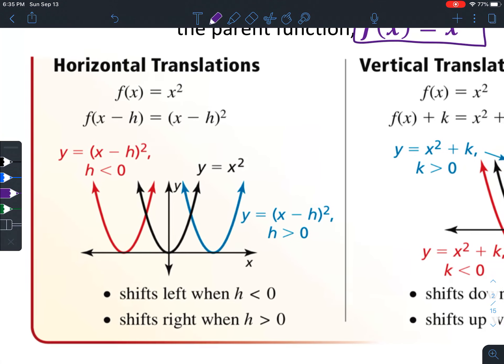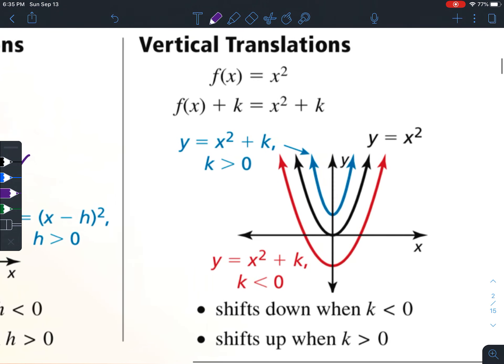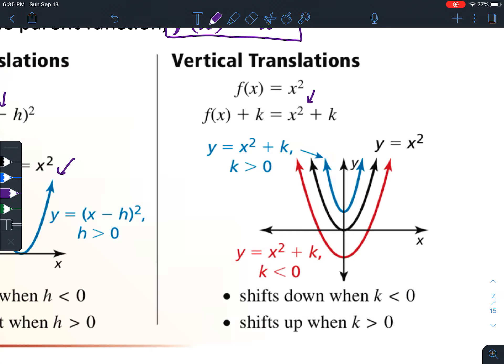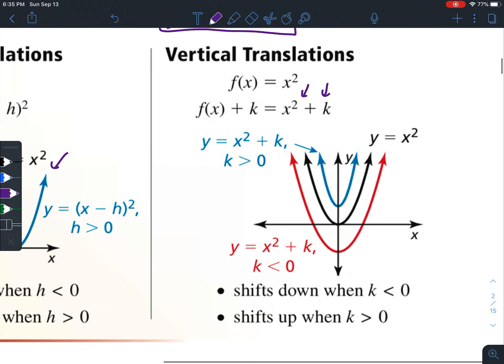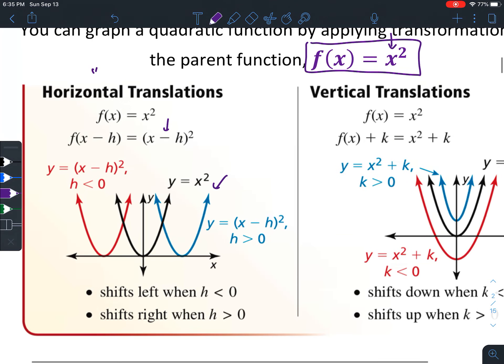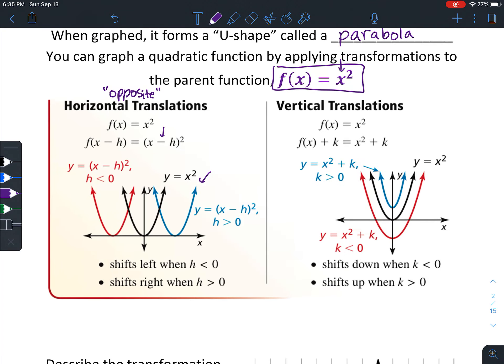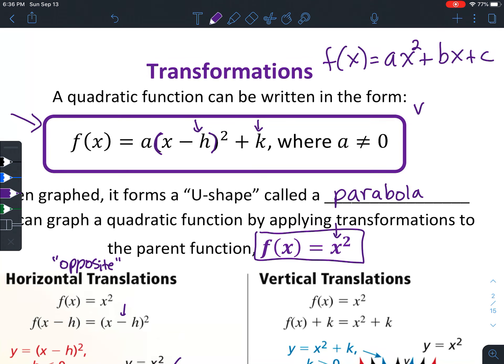So here's a little chart showing that when you subtract from the input, you actually move right. And when you add to the input, you actually move left. With vertical translations, the k is just added at the end. When you add, you move up, and when you subtract, you move down. So it's not the opposite for vertical. Maybe put opposite over here. It'll get easier once you've done several of these. And (h, k) is the vertex.